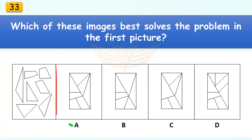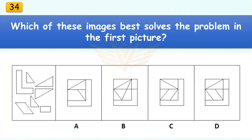Which of these images best solves the problem in the first picture? The correct answer is A. There are seven pieces in the assembled puzzle.